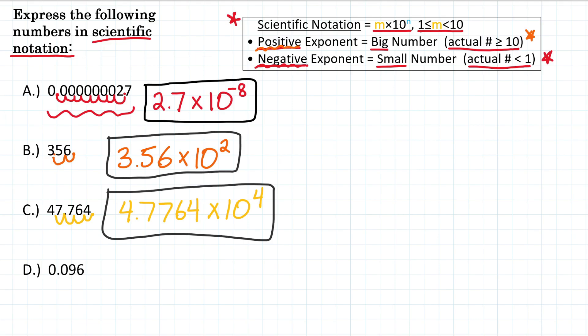Okay, last one for question D. We have 0.096. So here is our decimal. To get the first part of the scientific notation, we're going to move it 1, 2 spots to the right. So we get 9.6. So let's write that out. 9.6 times 10.